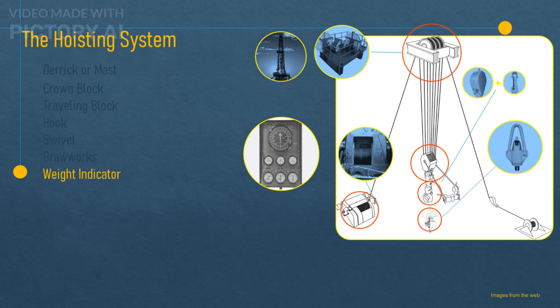The weight indicator. This is a device that measures how much weight is on the hook and displays it on a gauge on the driller's console. The weight indicator helps the driller adjust the weight on bit and optimize the rate of penetration.